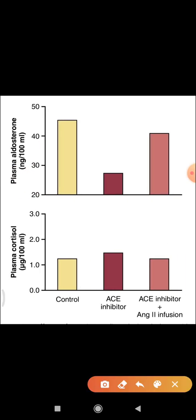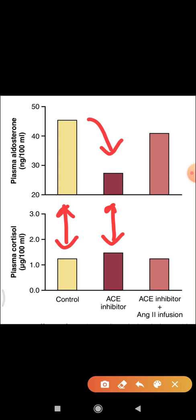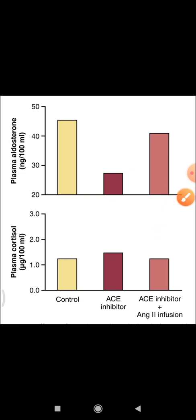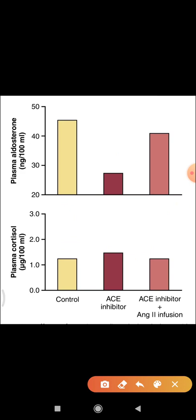This figure shows the role of angiotensin II in plasma aldosterone and plasma cortisol. The upper graph shows plasma aldosterone and the lower shows plasma cortisol. In the control state, no drug is given. When an angiotensin converting enzyme inhibitor is given, plasma aldosterone rapidly decreases, because angiotensin II normally increases plasma aldosterone. However, there is no effect on plasma cortisol. When angiotensin II is infused again, plasma aldosterone rapidly increases, but again there is no effect on plasma cortisol. This confirms that angiotensin II plays an important role in regulating plasma aldosterone but not plasma cortisol.